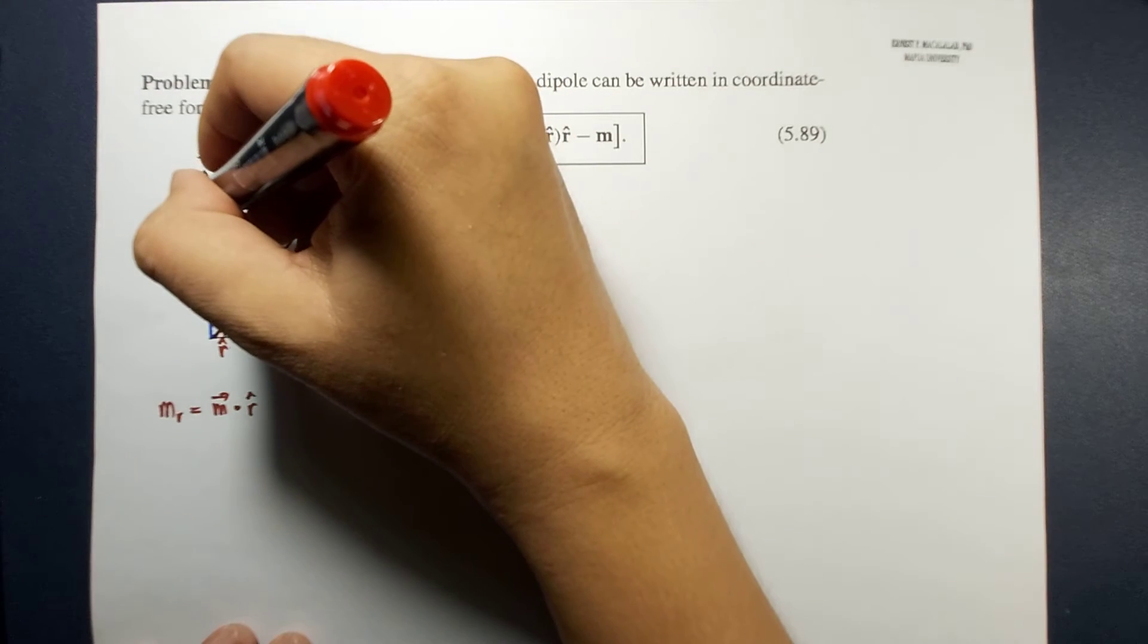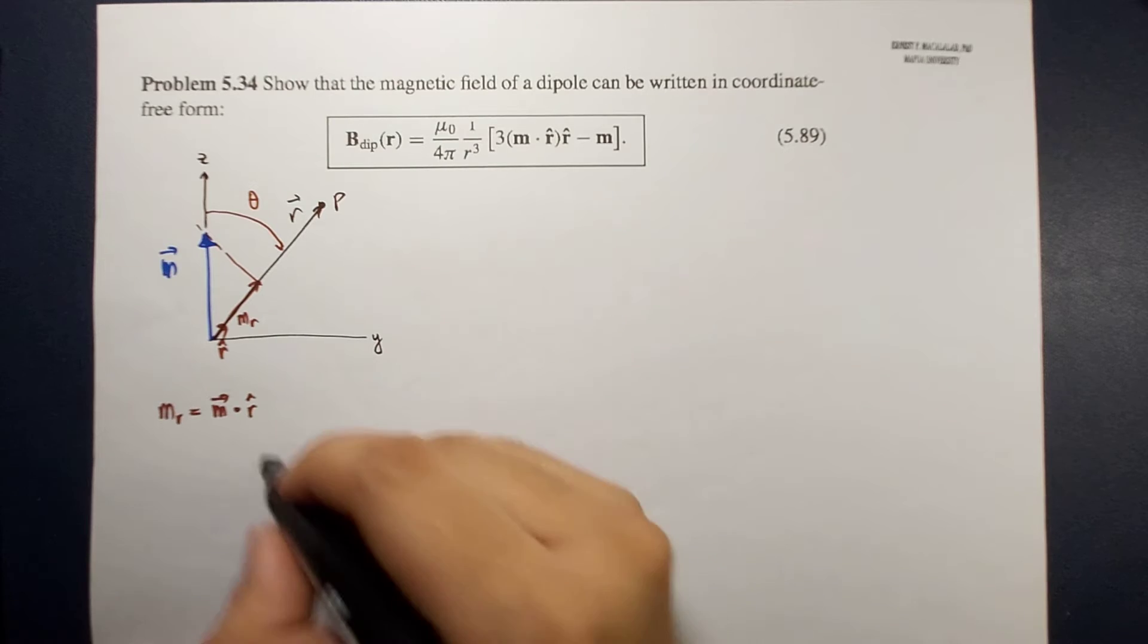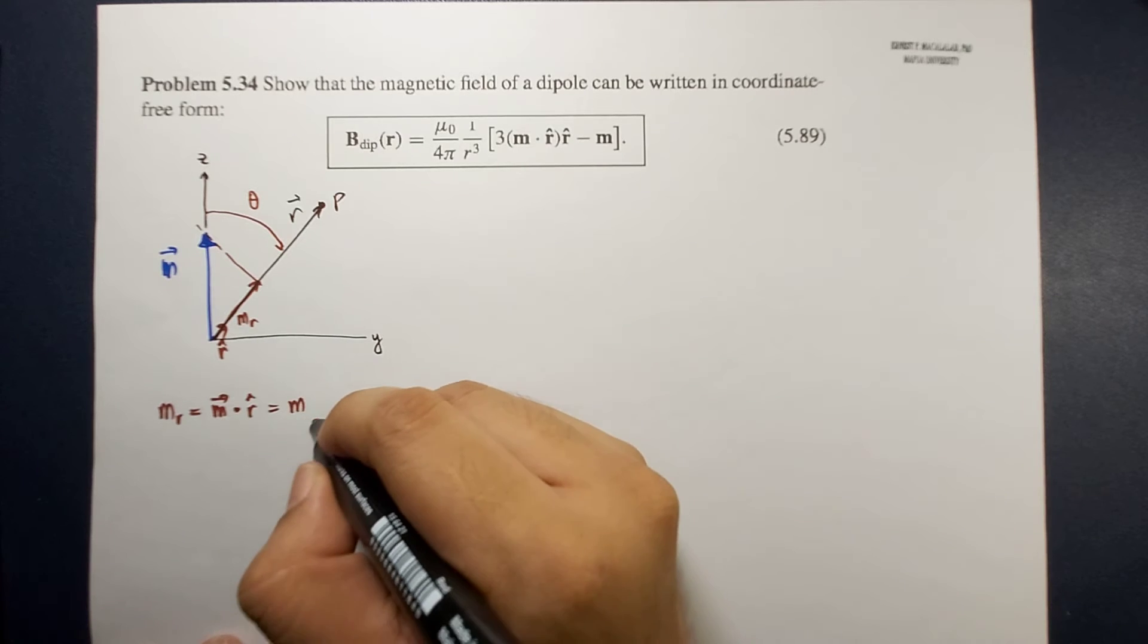Okay, so if this is your theta direction, so this is m cosine theta. This is m cosine theta. Very good.